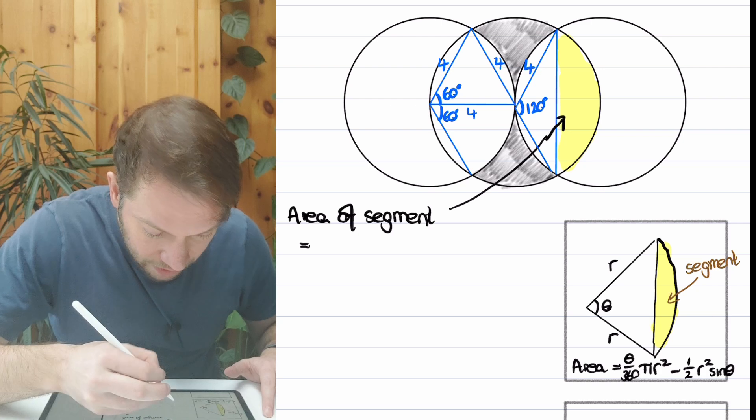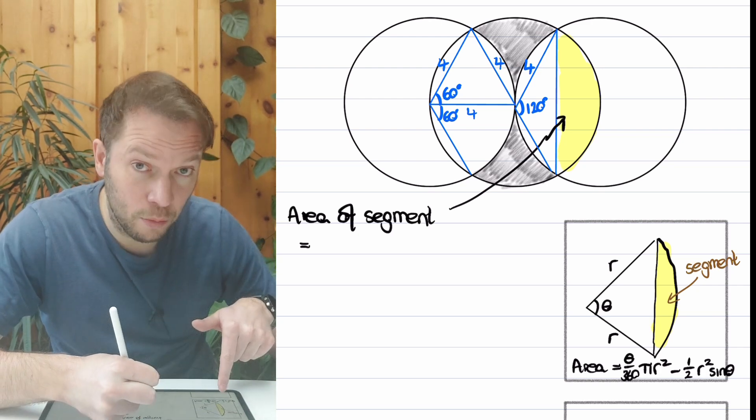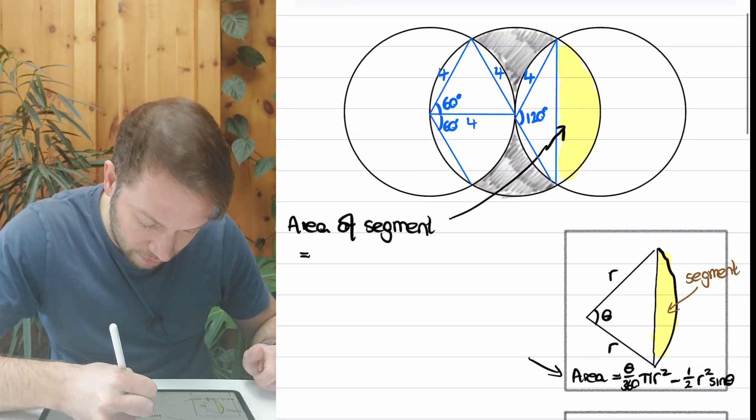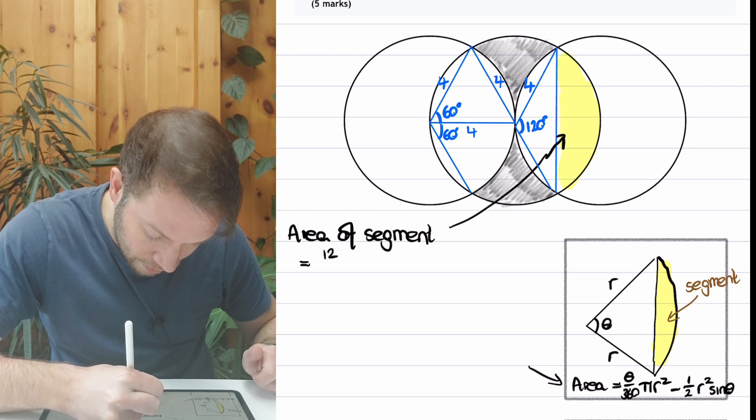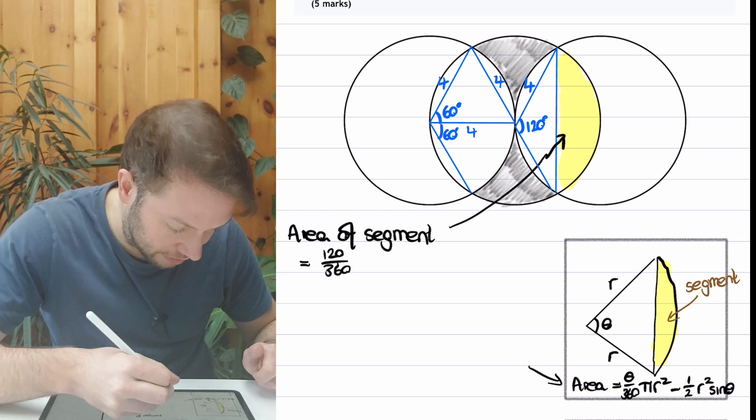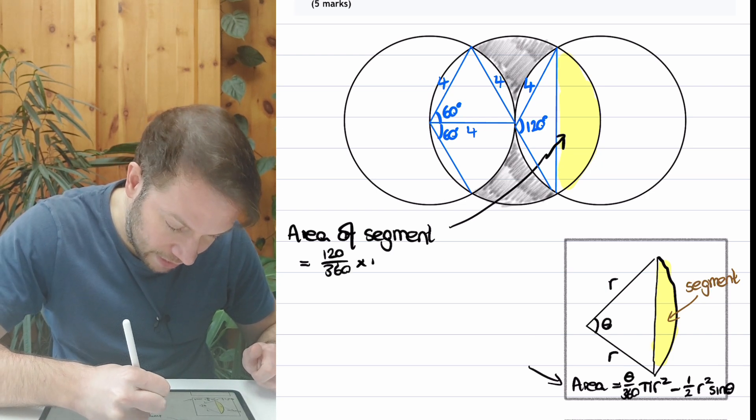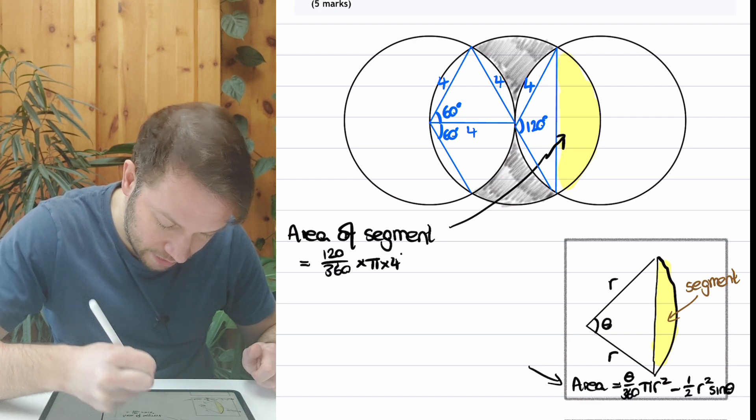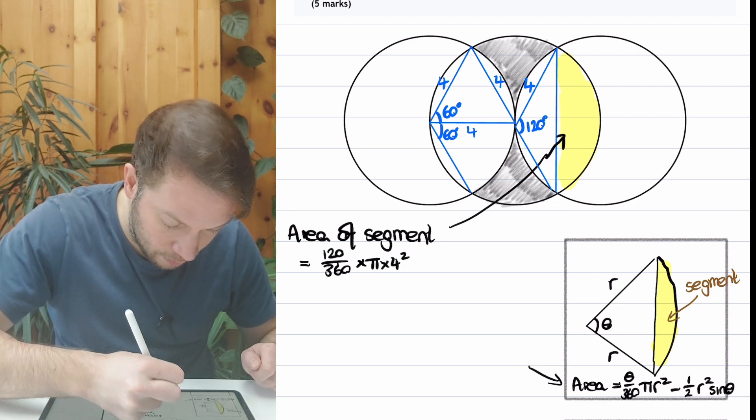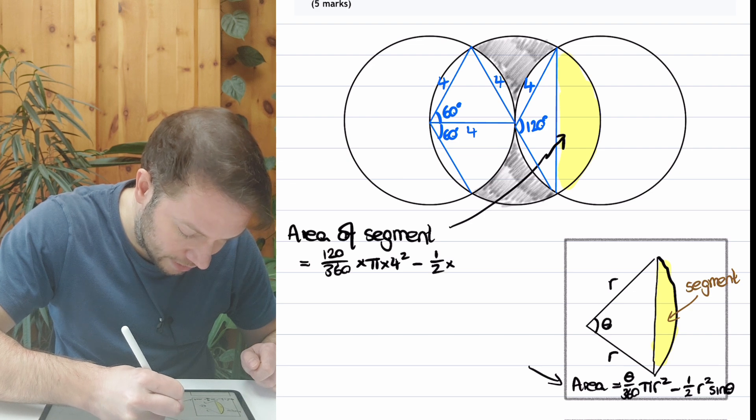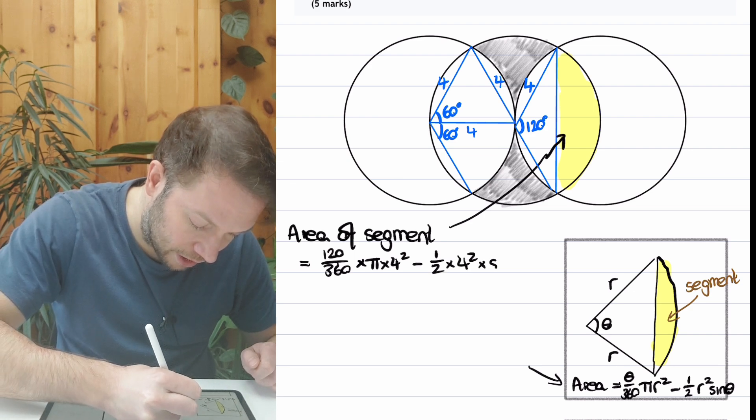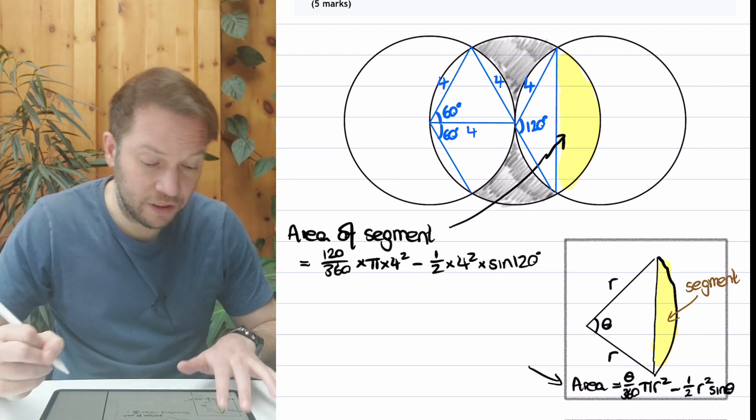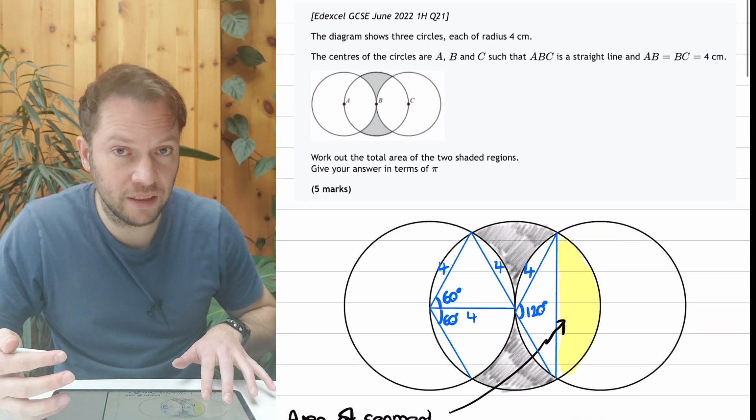So now we've got everything we need. The area of that segment is—let's use the formula on the right—θ/360, so 120/360 times by π times 4², and then we're minus half r² times sine of 120. Now, this is actually, believe it or not, a non-calculator paper. How would we find sine of 120 degrees?